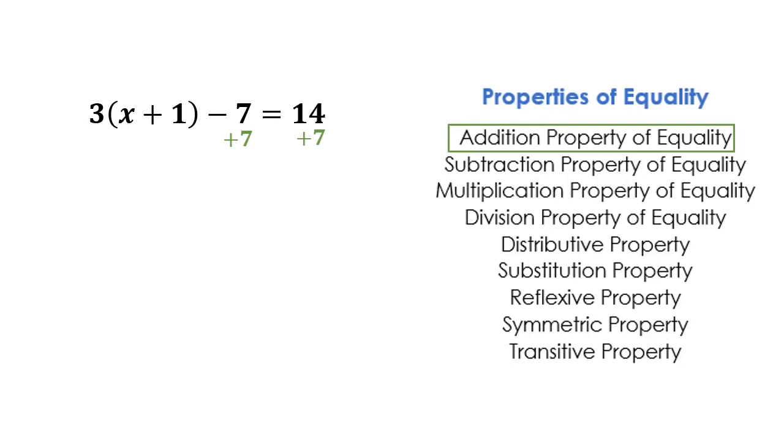So we're using that addition property of equality to narrow down this statement a little bit. Now we've simplified it somewhat by moving the 7, and now we've got left with this 3 times x plus 1 equals 21.